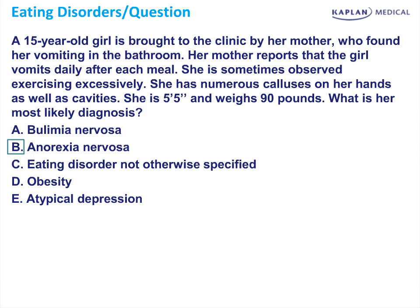The distinguishing features for anorexia include the patient's low BMI, as well as the overall picture of a patient who is excessively exercising and vomiting after meals. This gives the overall picture of an anorexic patient, whereas a bulimic patient could have some similar effects but will have a normal BMI and will not have disturbances in their metabolism.